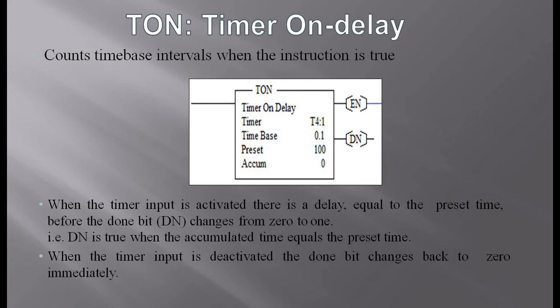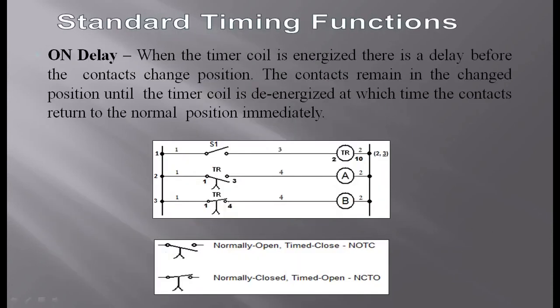When the timer input is activated, there is a delay equal to the preset time before the done bit (DN) changes from 0 to 1. When the accumulated time equals the preset time, DN becomes true. When the timer input is deactivated, the done bit changes back to 0, the accumulator resets to zero, and the enable bit is also deactivated.